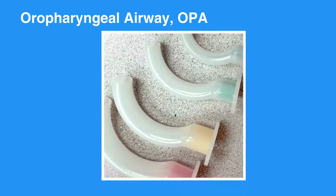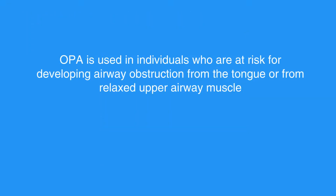The oropharyngeal airway, or OPA, is a J-shaped device that fits over the tongue to hold the soft hypopharyngeal structures and the tongue away from the posterior wall of the pharynx. OPA is used in individuals who are at risk for developing airway obstruction from the tongue or from relaxed upper airway muscle. A properly sized and inserted OPA results in proper alignment with the glottis opening.